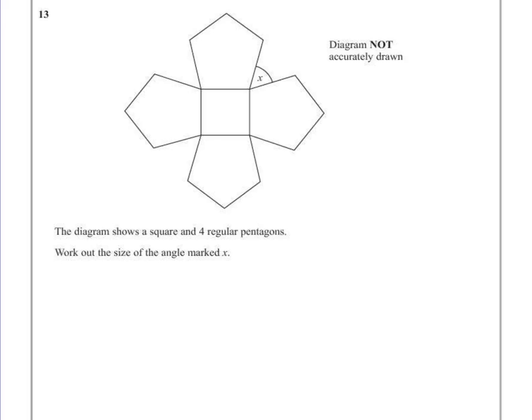So a very easy one, one that we can work out is the fact that around this point here it adds up to 360 degrees, so there are 360 degrees at a point. One of the other things that we can tell straight away is that part of this is made up by the corner of the square, so that's going to be 90 degrees.